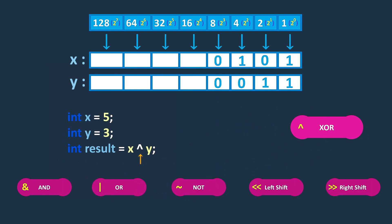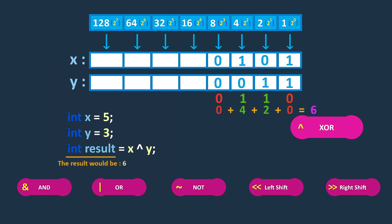The XOR operator performs a logical XOR operation between the corresponding bits of two operands. It returns a value where each bit is set to 1 only if the corresponding bits in the operands are different, otherwise the bit is set to 0. In this example, the binary representation of the result is 01110, because the second and third bits have different values between x and y. The first and last bits are the same in both numbers, so they are set to 0. Therefore, the decimal value of the result is 6.